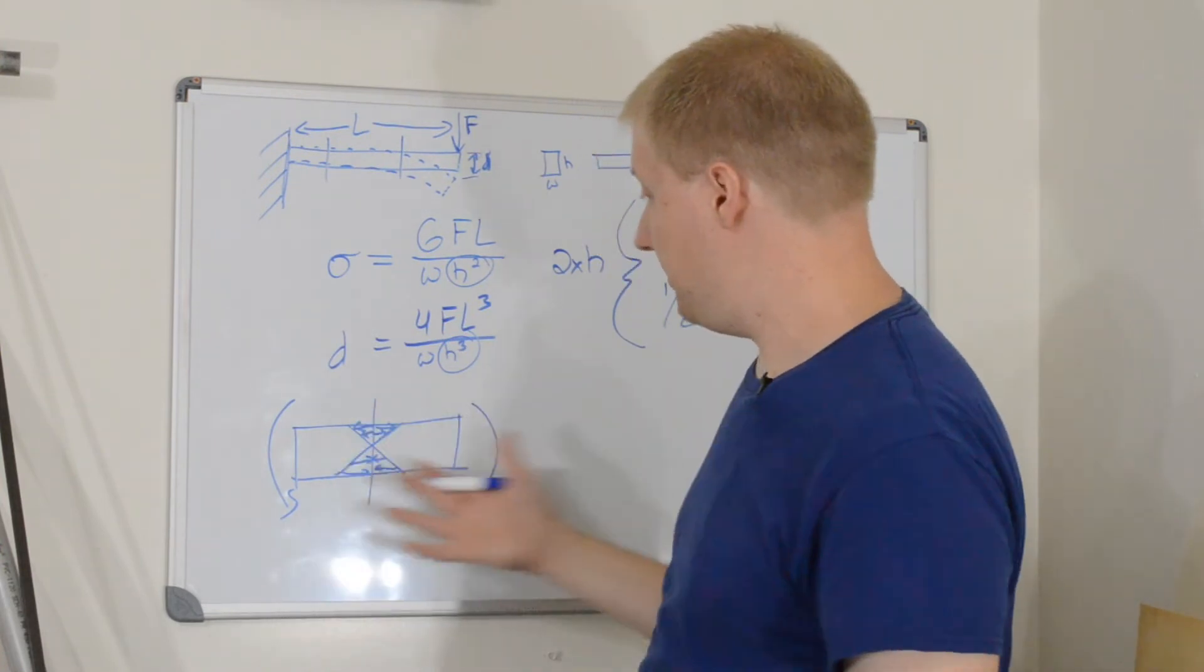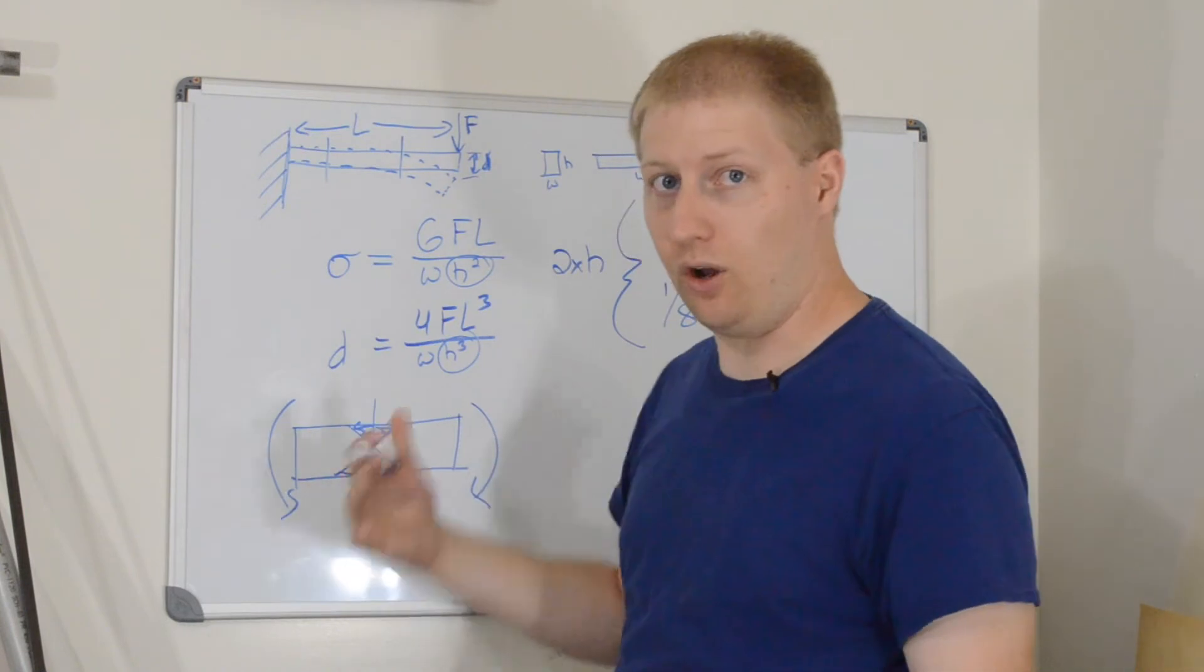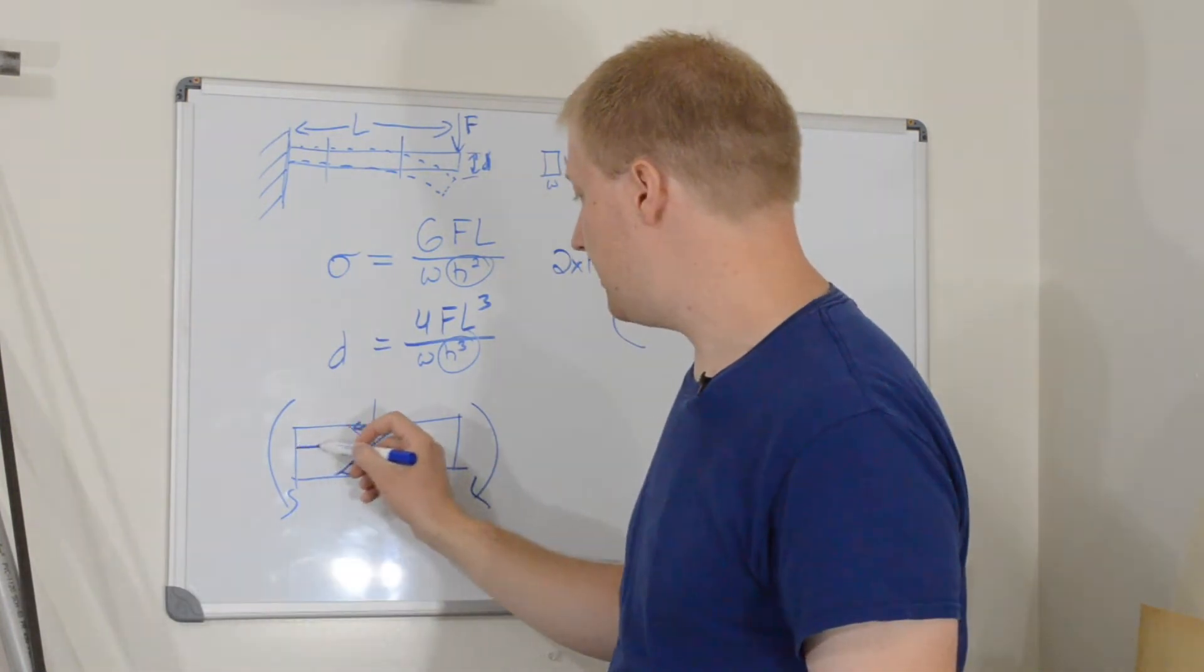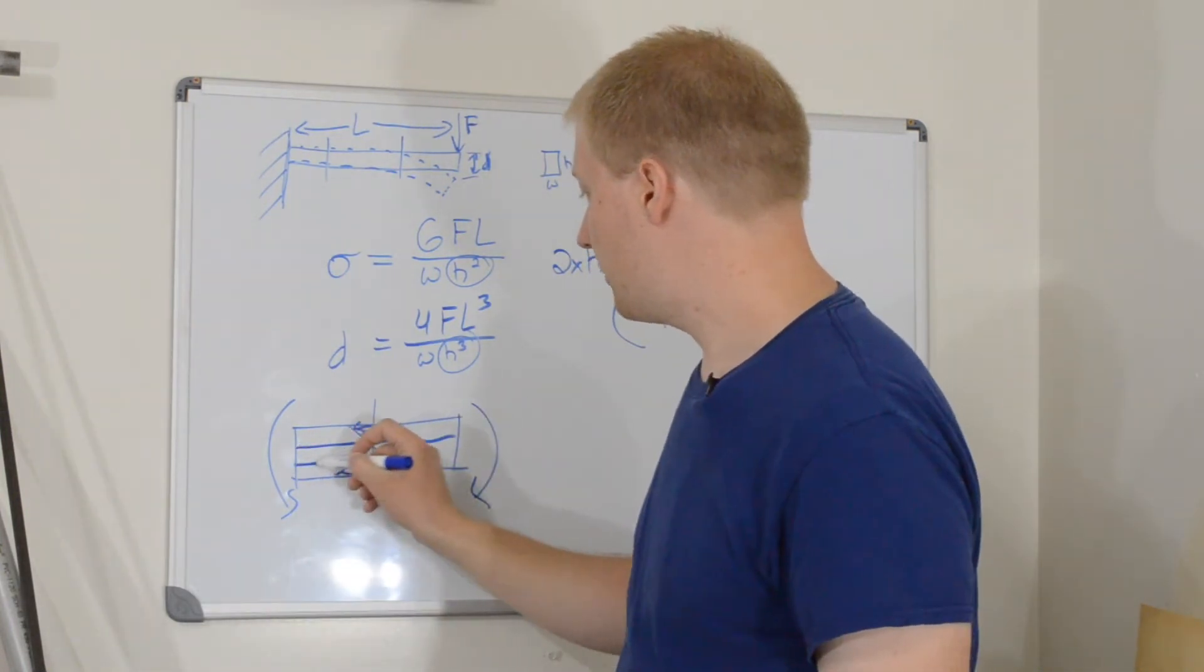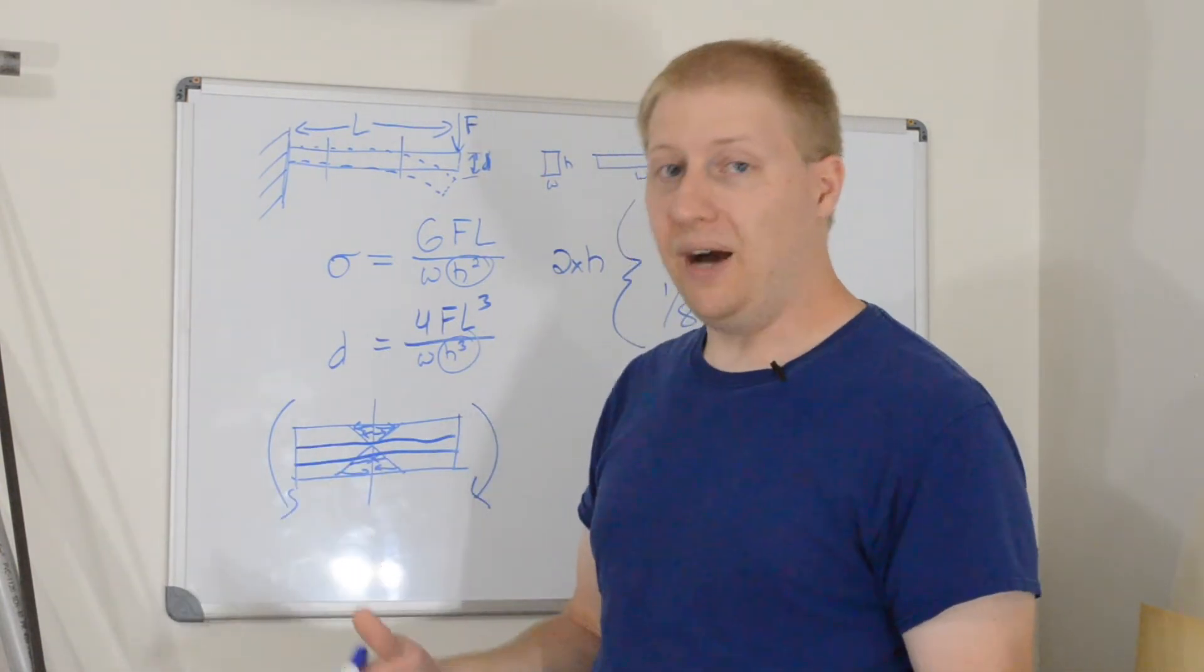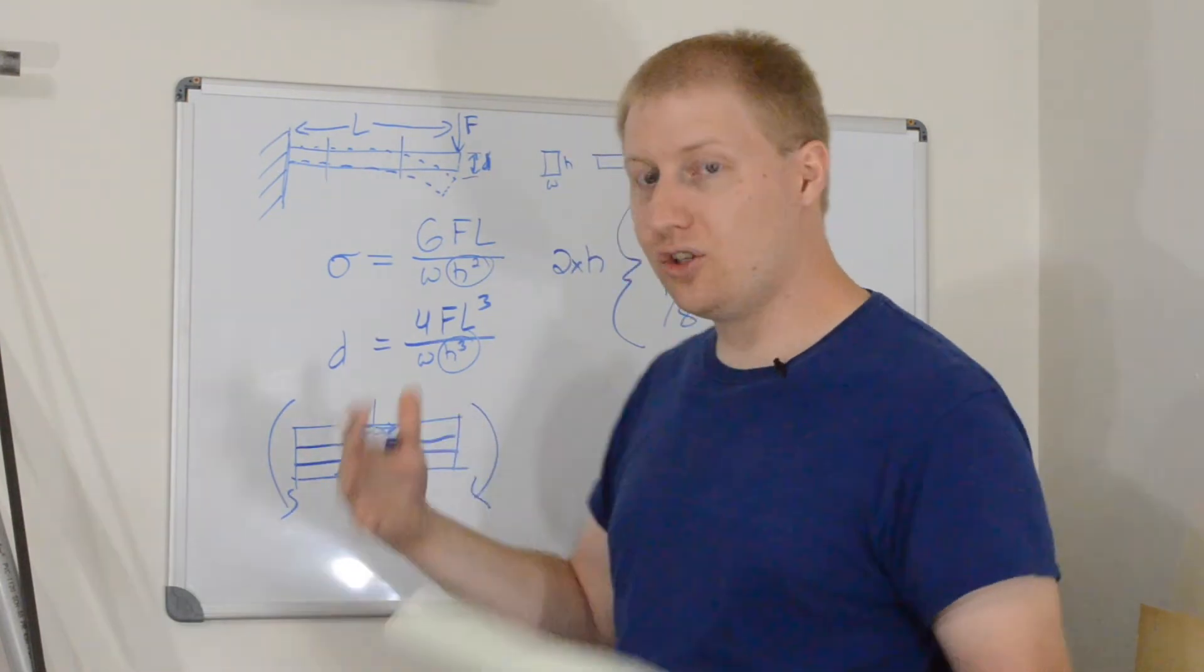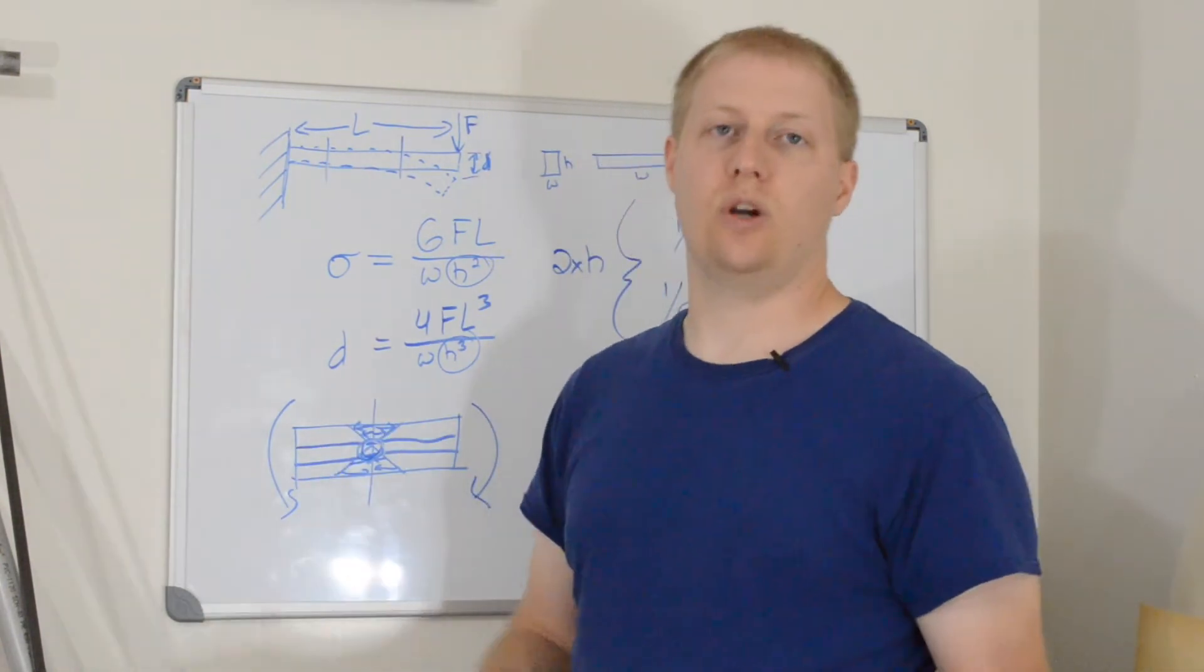is rather than having it be solid carbon fiber all the way throughout, what if we replaced the middle section with something that's very lightweight and not as strong, but it doesn't need to be as strong because the stresses right here in the middle are so low. That's what core is.